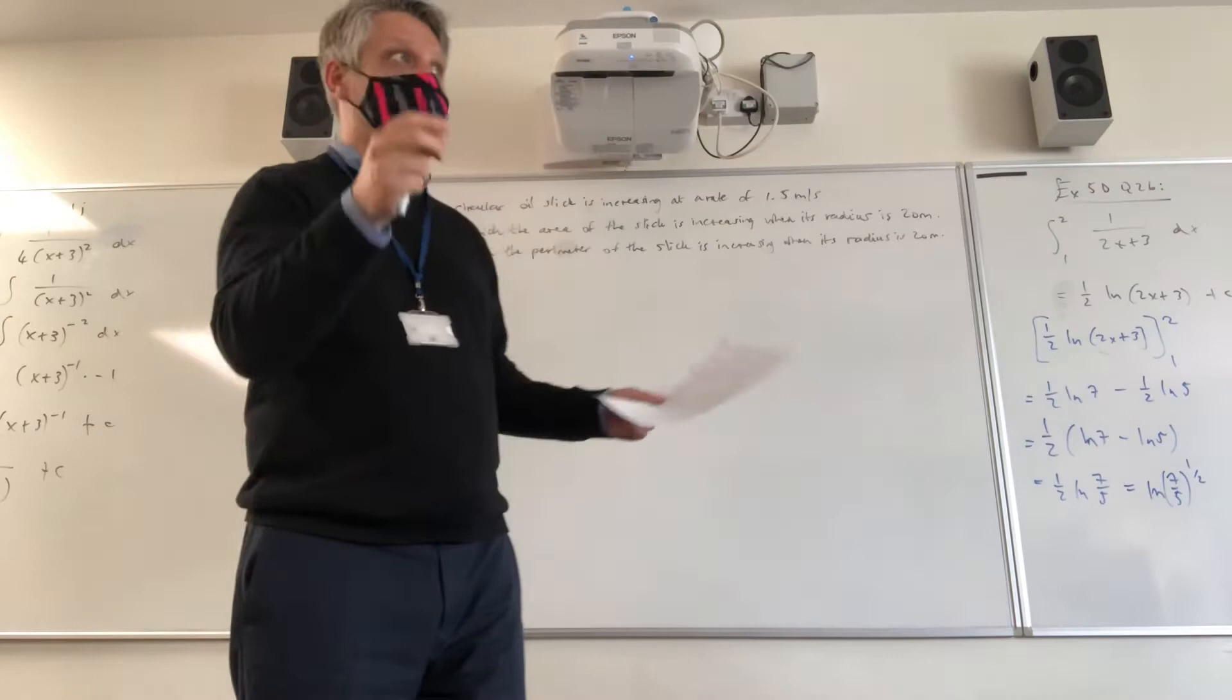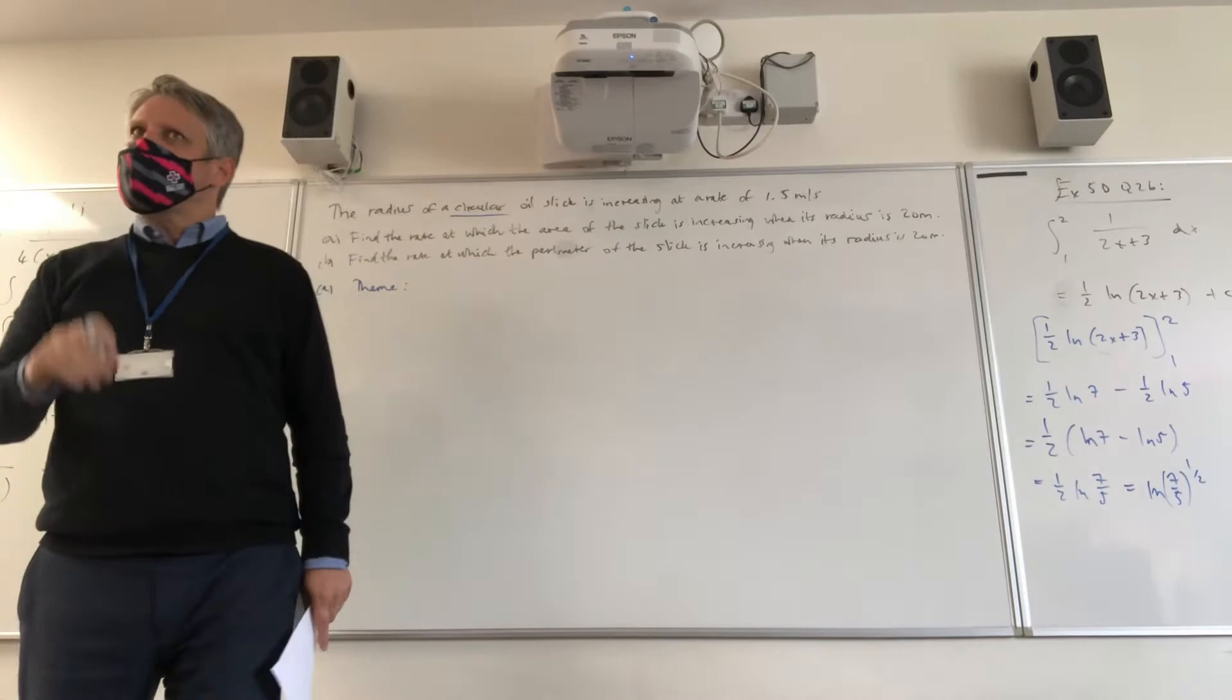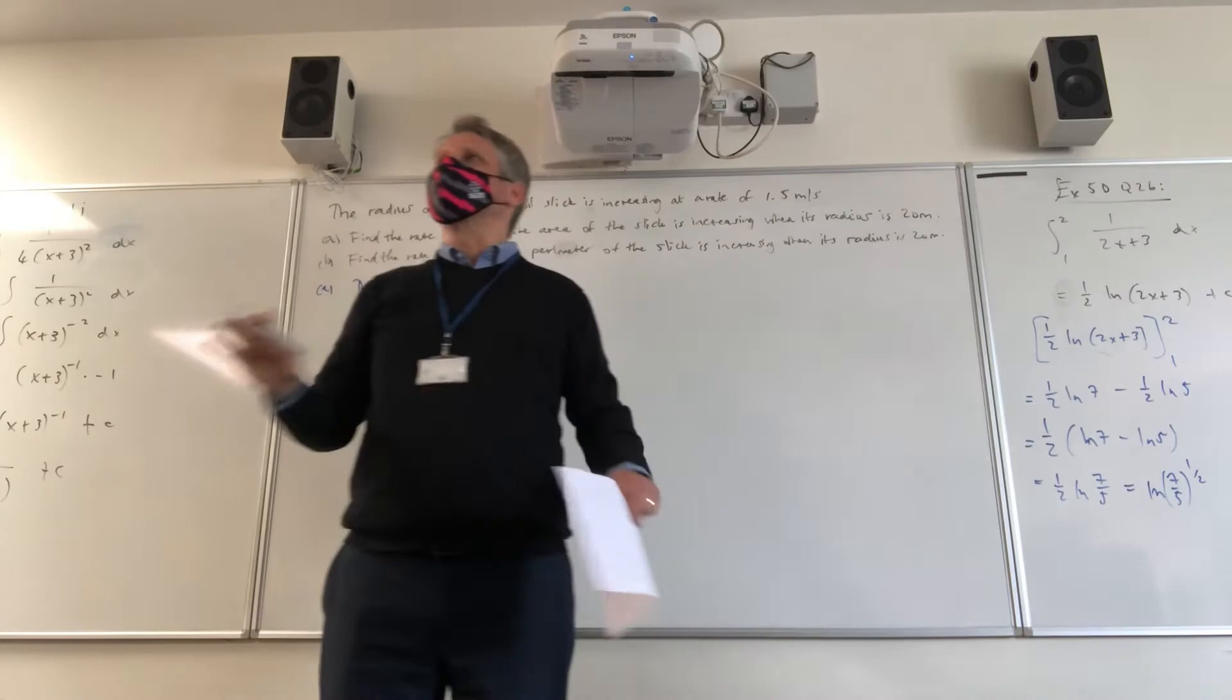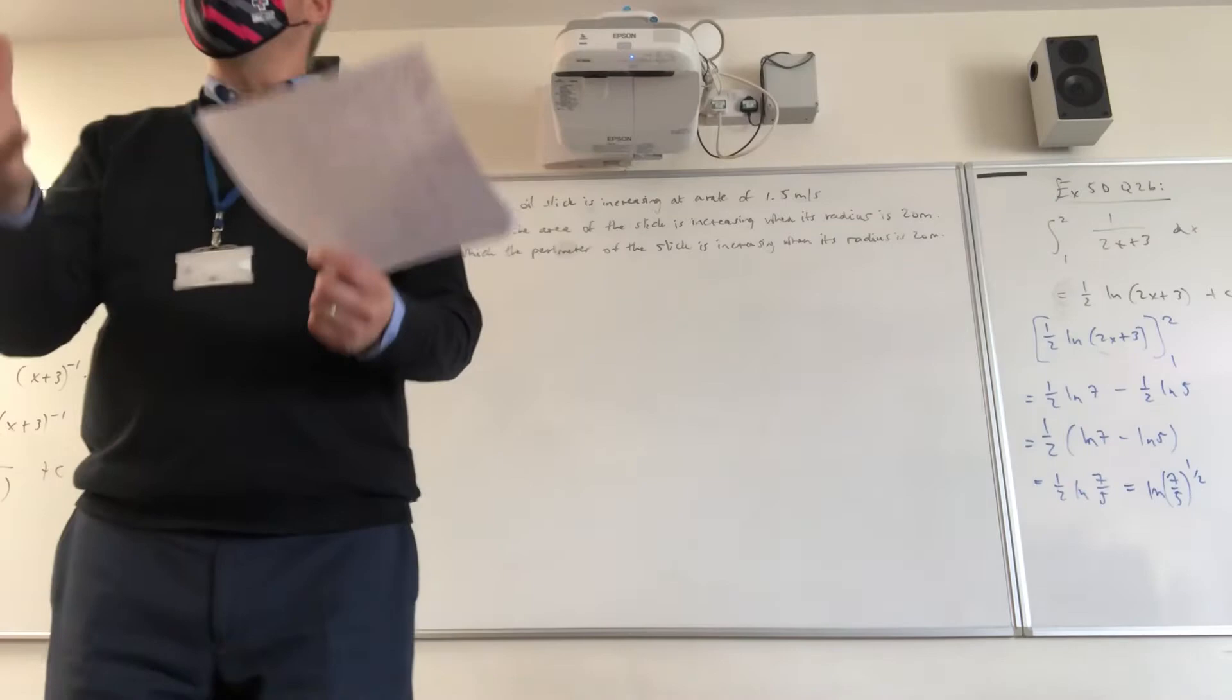The important things here are the fact that whatever we're dealing with in this kind of oil slick is that it's circular. So that kind of information is important when answering a question like this. So before I even start, I ask myself, what is the theme of this question? Are we talking area? Are we talking volume? Are we talking perimeter or circumference? What's going on? And what kind of formulas are associated with those kinds of shapes?